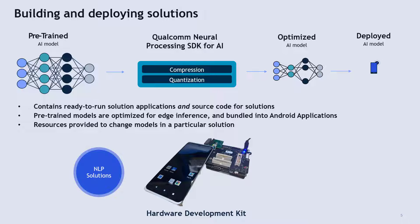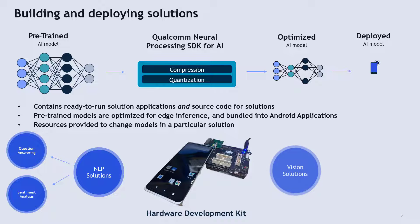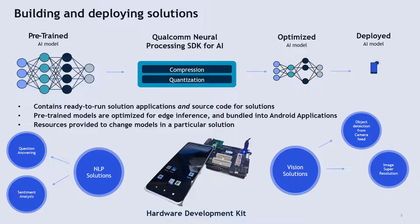In NLP solutions, we have two solutions. One is On-Device Question Answering and the other one is On-Device Sentiment Analysis. Coming to Vision solutions, we have three solutions. One is Object Detection from Live Camera Feed. Second one is Image Super Resolution, which is image upscaling. And the third one is Image Enhancement, enhancing the contents of the image.